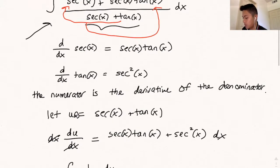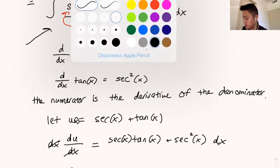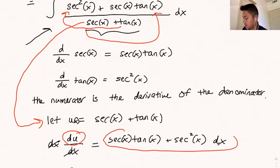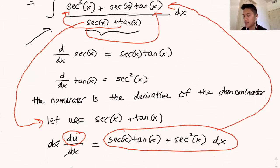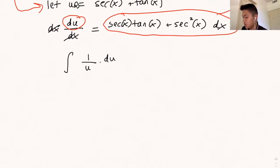So remember u is secant x plus tangent x. That corresponds to the denominator. And remember that the du is just the numerator on top. So with those two pieces of information, we have this integral, one over u du.